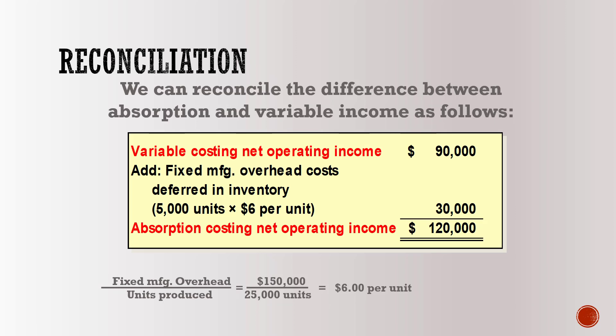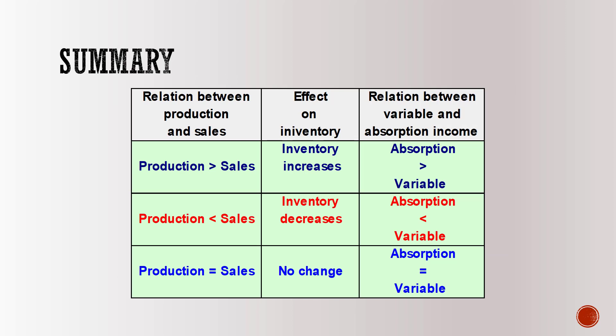Now let's reconcile the difference. If we add the fixed manufacturing overhead cost deferred in inventory — $30,000 in our example — to the variable costing net operating income of $90,000, we get the absorption costing net operating income of $120,000. If production is greater than sales, overall inventory will increase and absorption costing income will be greater than variable costing income. On the other hand, if production is less than sales, inventory will decrease and absorption costing income will be less than variable costing income.